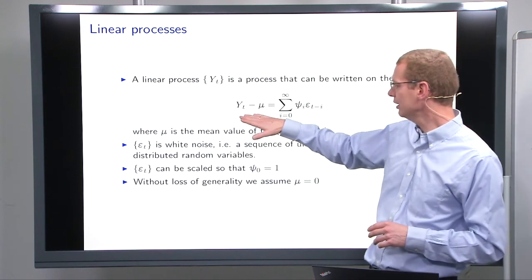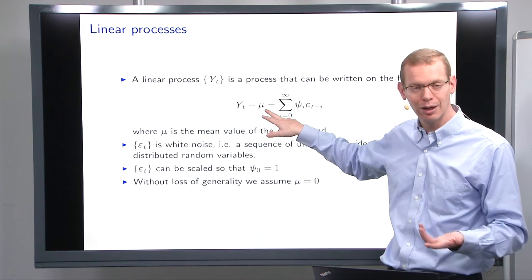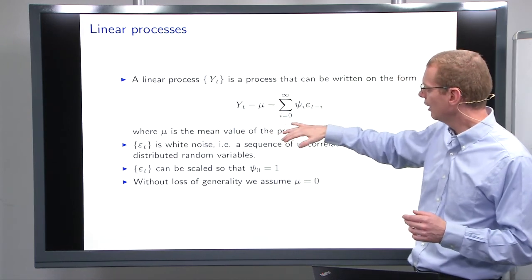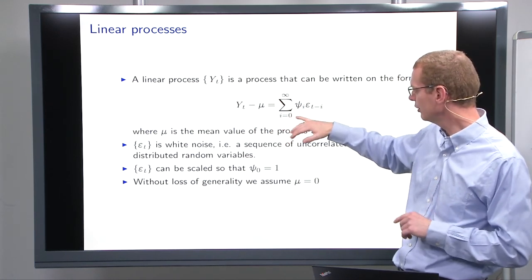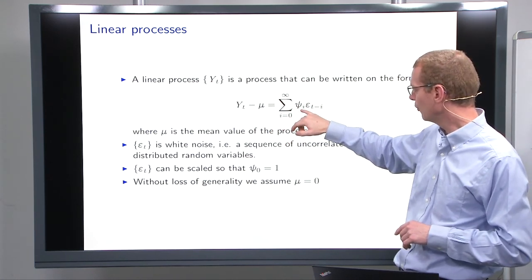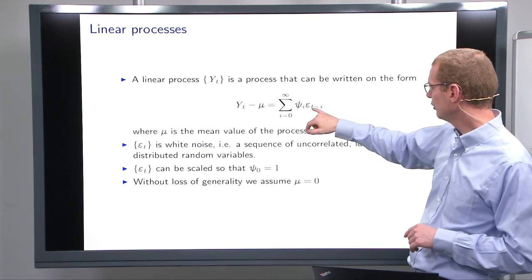is that we can write a linear stochastic process y_t with a mean value μ, and we define it as the infinite sum from i equals zero to infinity of some ψ weights and some epsilons relative to time t.